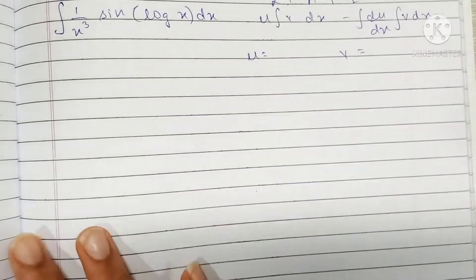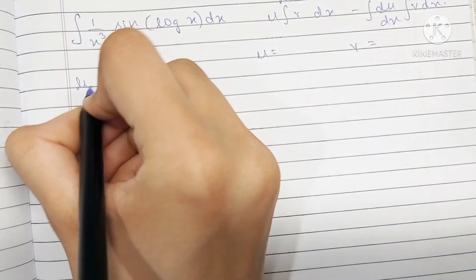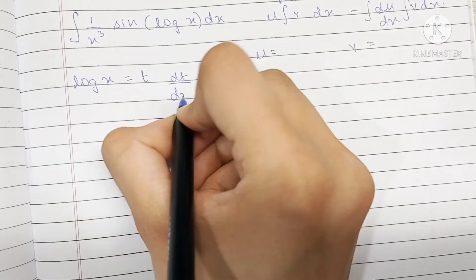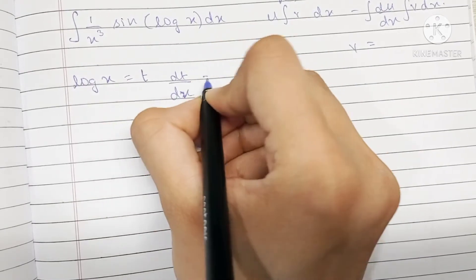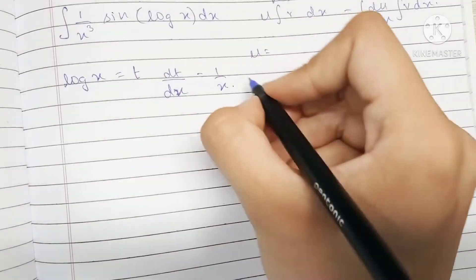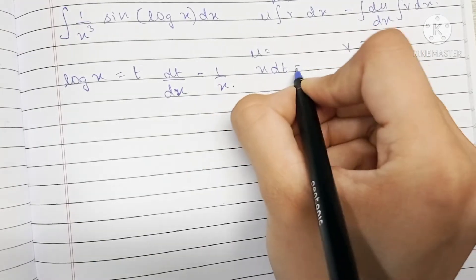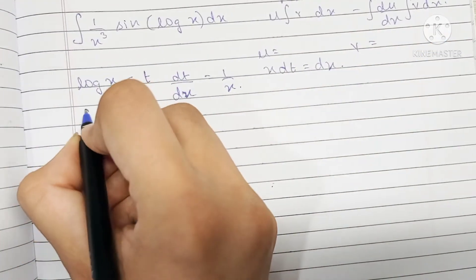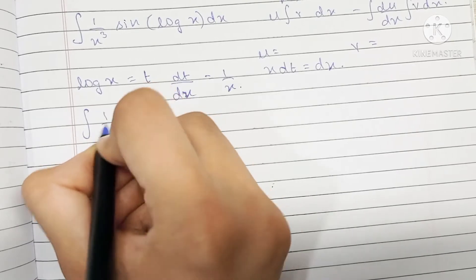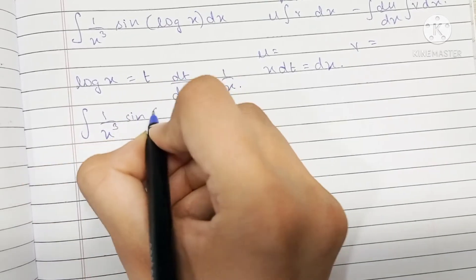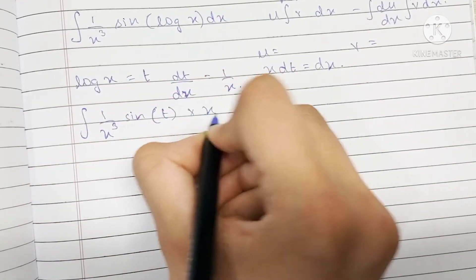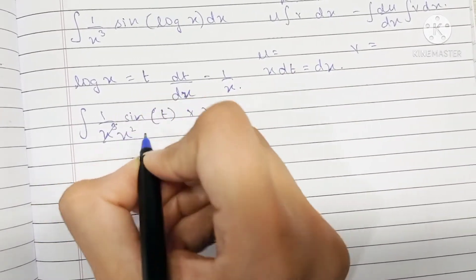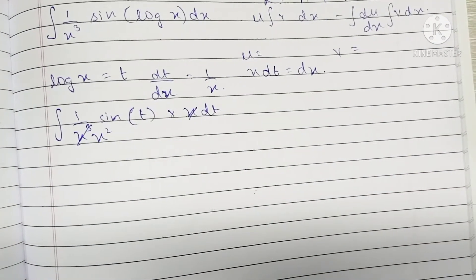First of all, we're going to substitute log x as t, which makes dt/dx = 1/x, which makes x dt equal to dx. Writing this in the integral, we have 1 over x cube times sine t times x dt. We can cancel one of the x's, making this x squared.